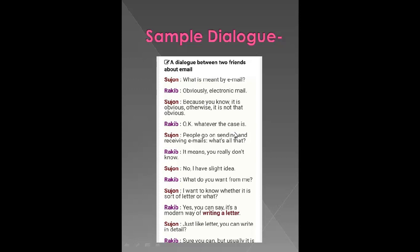Now I just want you all to understand how we write a dialogue. If Sujon is speaking, we write Sujon's name and we give a colon — these two dots, this is called a colon. And then we write whatever Sujon has spoken. The exact words of the speaker are written. You have to write the exact words; you cannot make any changes in the words of the speaker.